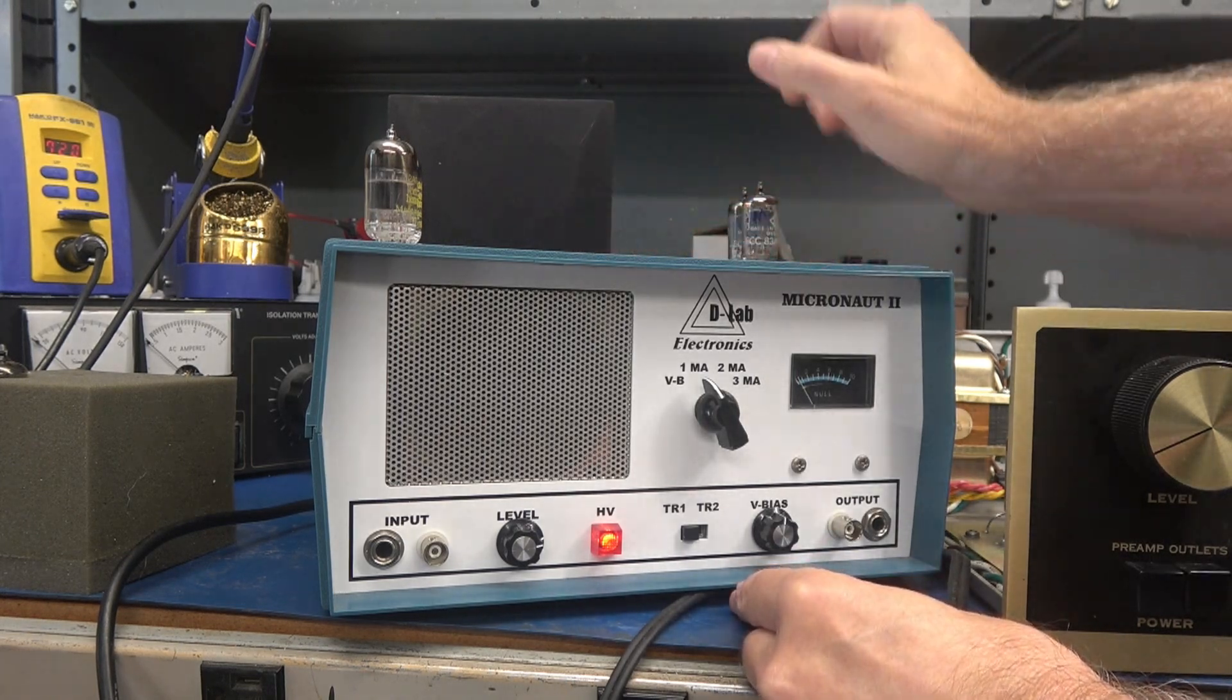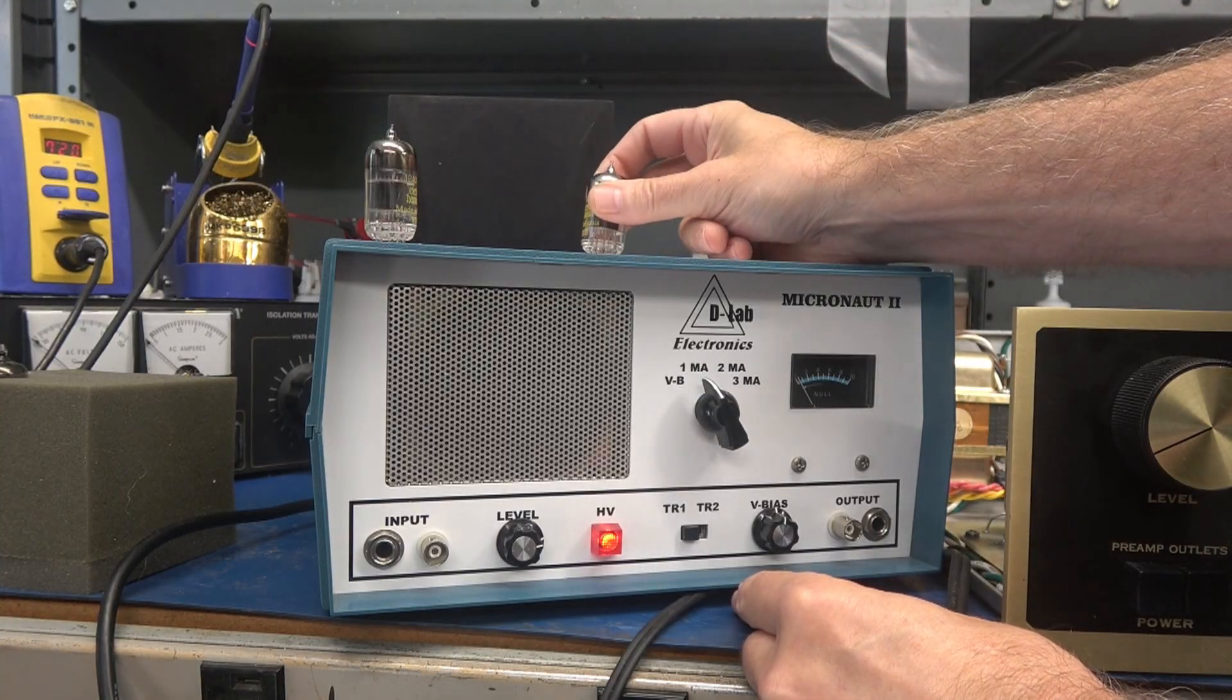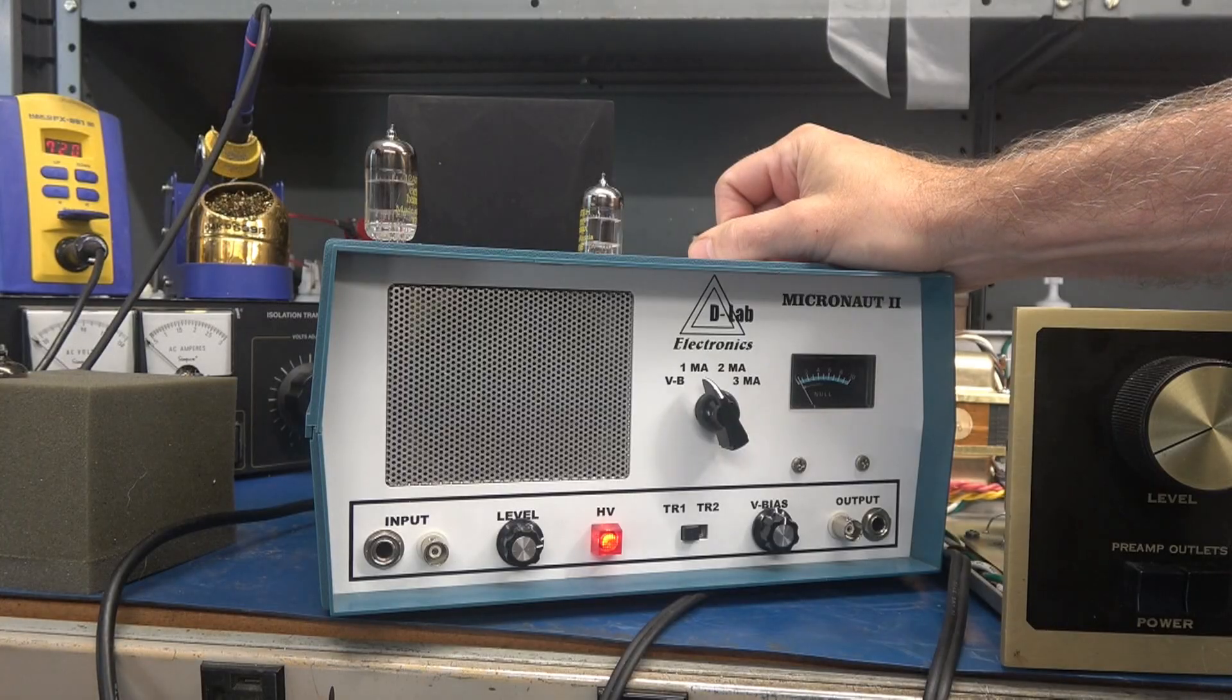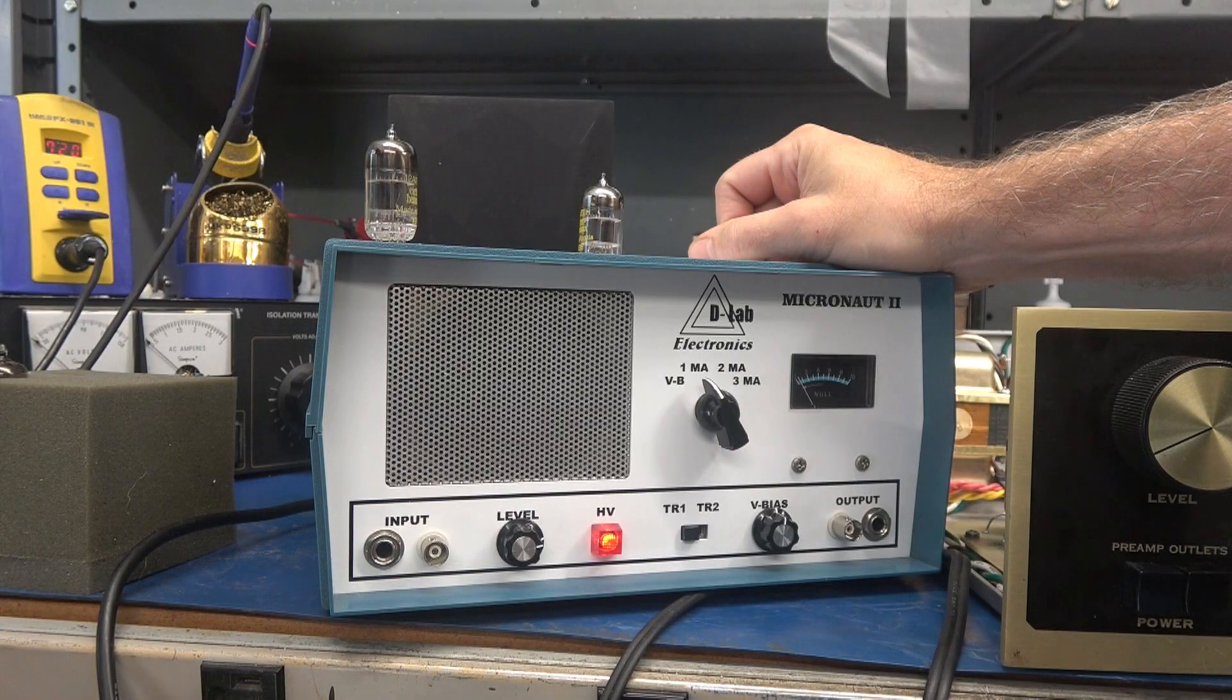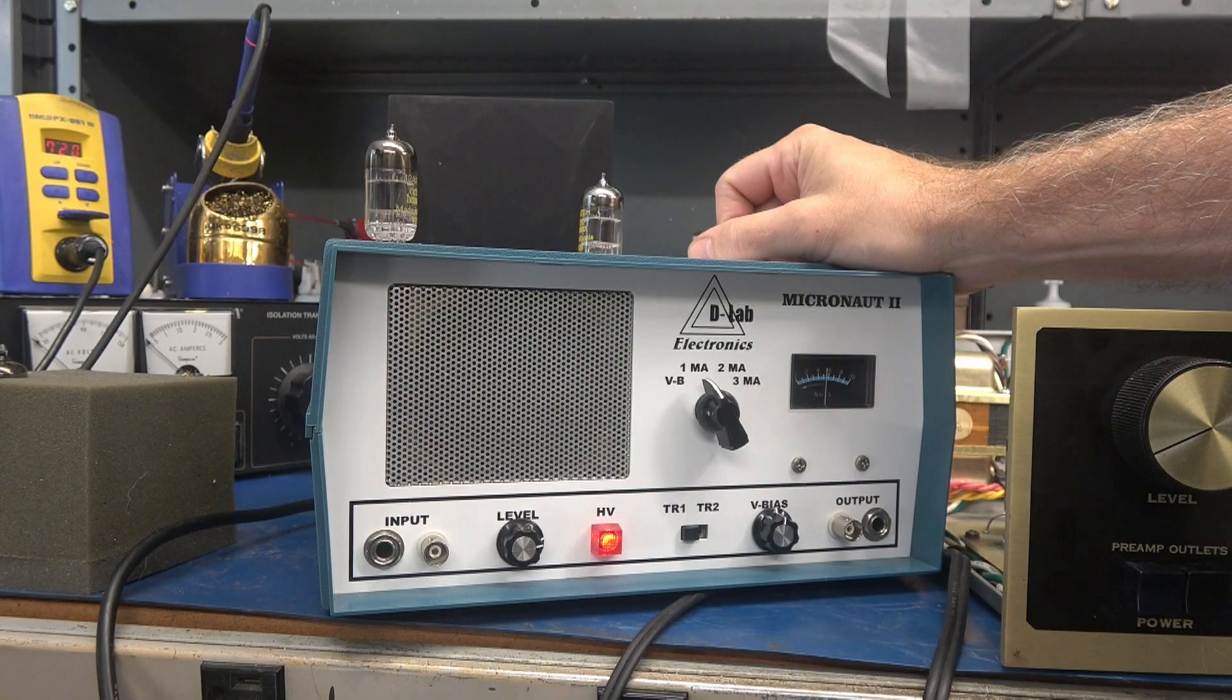Then I heard some rumbling in the preamp. And these Electroharmonix tubes have some heater to cathode leakage. So take a listen to this.